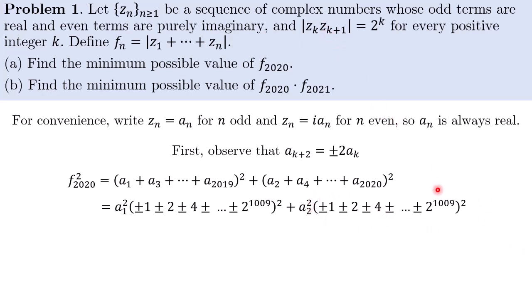Similarly, for the imaginary part, I'm going to have a string of plus or minus power of 2. And to achieve the minimum possible value, we are going to choose signs such that this term is equal to 1.